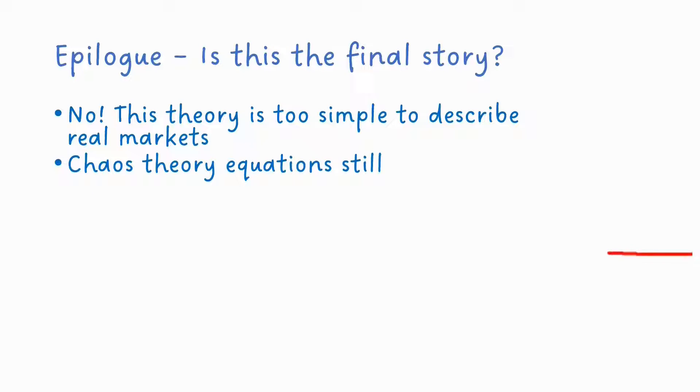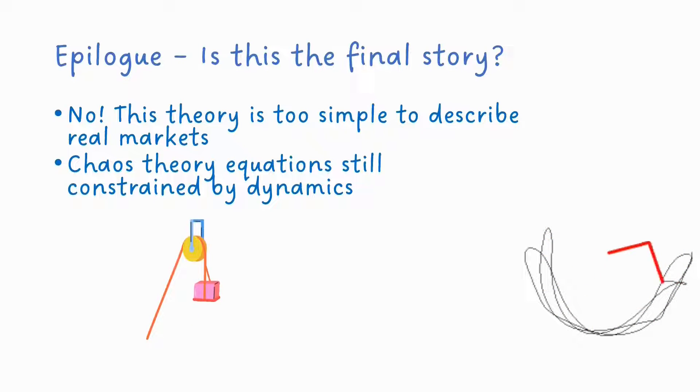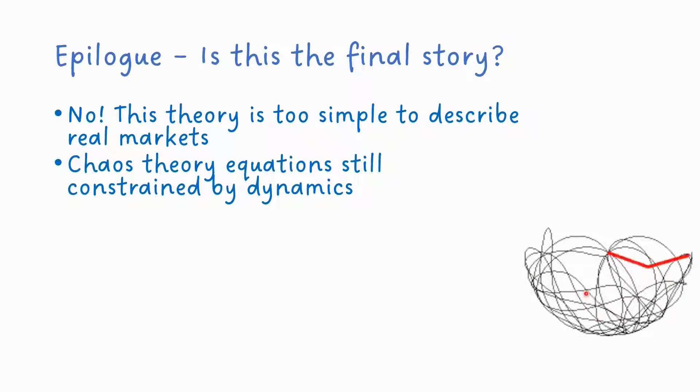It's also important to realize that these chaos theory equations are still constrained by their own dynamics. You can see this in the illustration here that the arms of the pendulums are constrained to this particular area. So even though they make quite a crazy pattern, they're not completely random or can do completely crazy things like appear way over here.